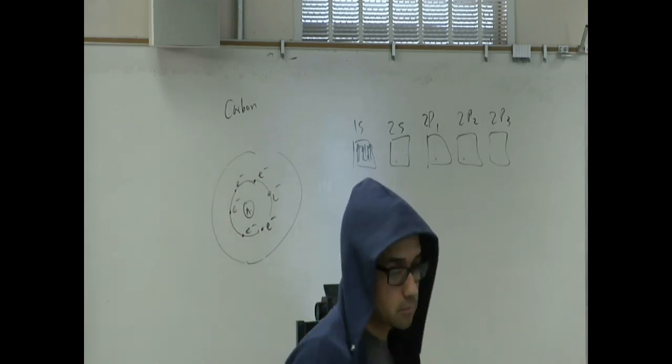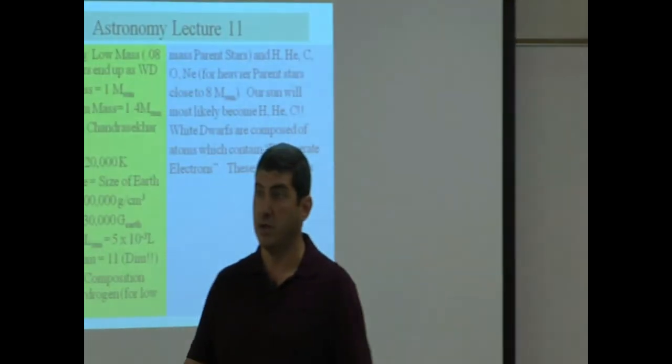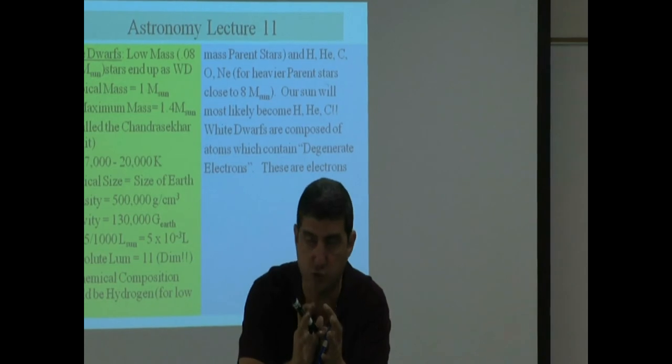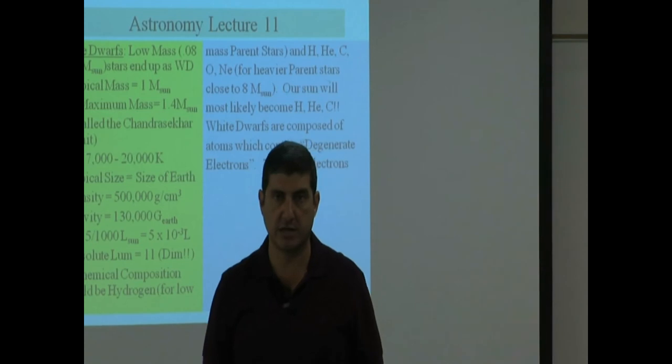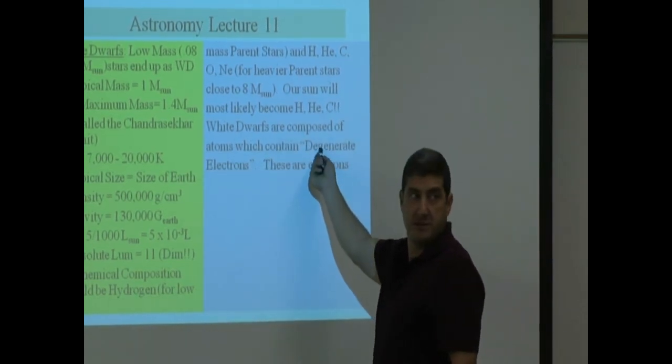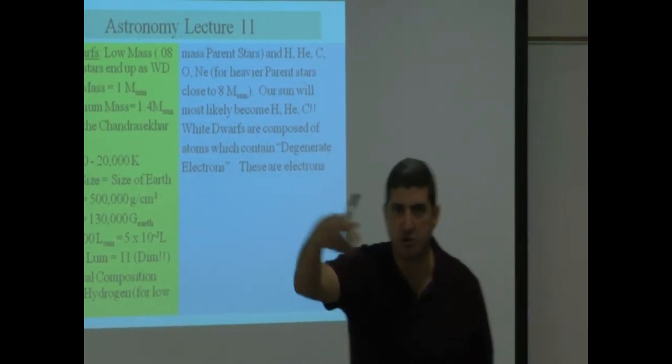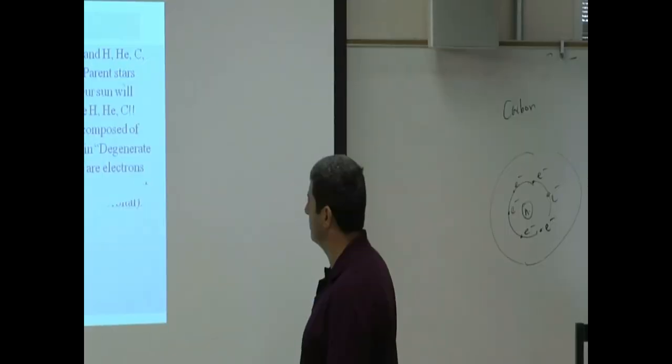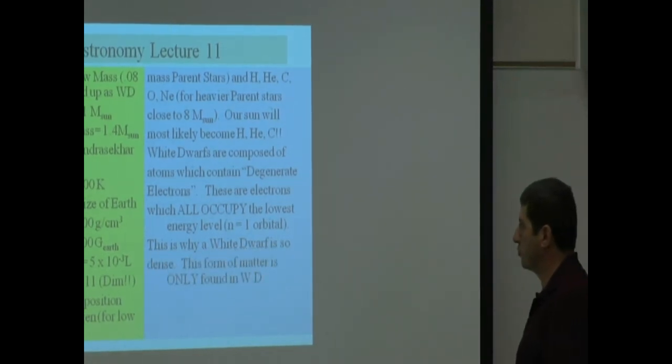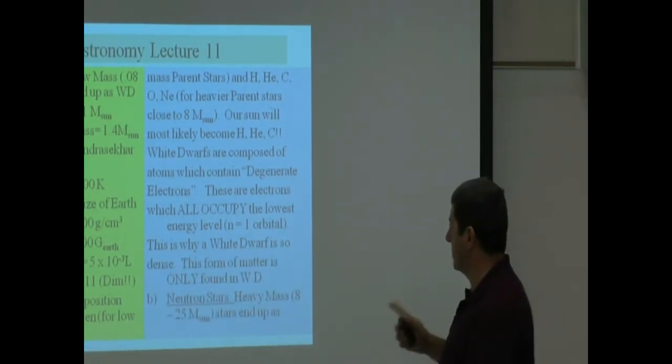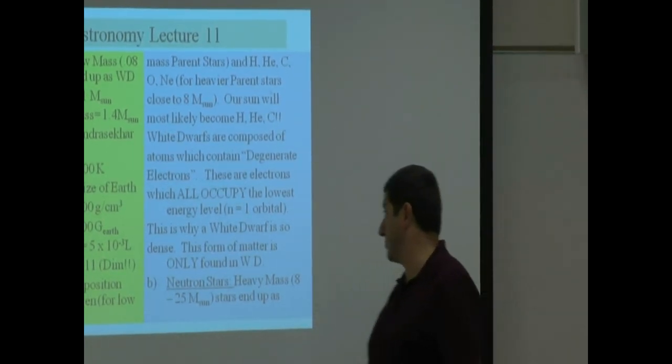In other words, they disobey the laws of physics and chemistry that we know of. The electrons are pushed into the first orbit. Nothing like that exists that we know of. What are these known as? Since they disobey the laws, they're called degenerate electrons. They're degenerate. They all occupy the first orbit. This is why a white dwarf is so dense. This form of matter is only found in white dwarfs. Now let's talk about neutron stars.